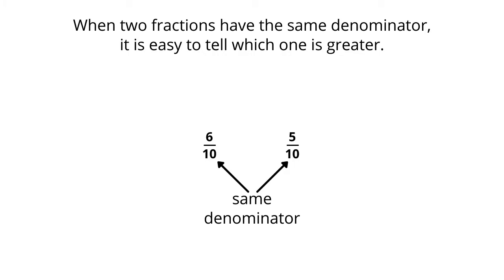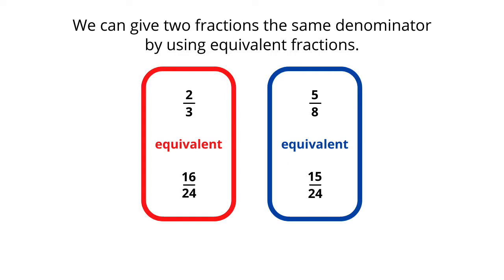Yes. When two fractions have the same denominator, it's easy to tell which one is greater. And we can do that. We can give the amounts two-thirds and five-eighths the same denominators by using equivalent fractions.